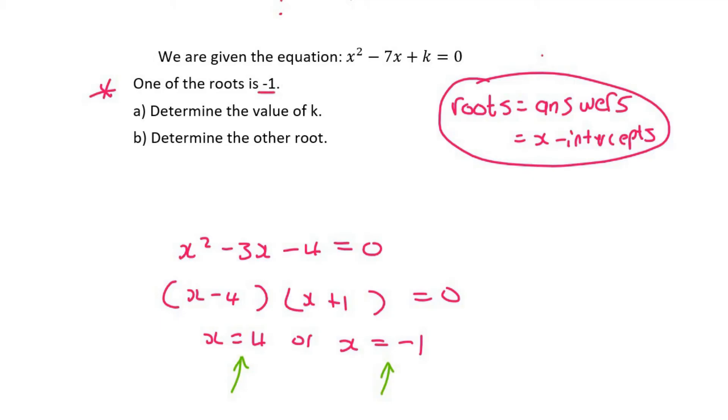So they tell us one of the roots is minus one. So we can plug that in. So minus one. And then we don't know what k is, but we know that the whole answer should be zero. And then we can just say one plus seven plus k equals zero. And if you had to go solve for k, you would see that k is equal to negative eight.